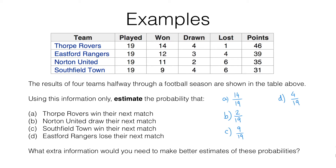All of these probabilities we're estimating are based on an experiment — we've had these teams play matches and we're using that information to come up with probabilities. These probabilities have a specific name: they are called relative frequencies. They're not actually frequencies — they are experimental probabilities. Used in a sentence, we would say the relative frequency of Thorpe Rovers winning is 14/19, meaning the probability that they win a match is 14/19, based on experimental data — in this case, their matches in the league.